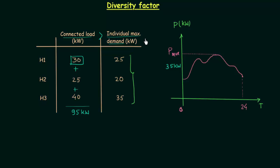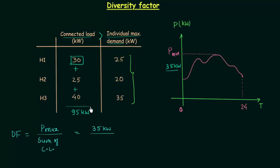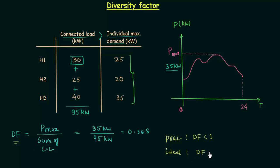In the previous lecture we saw what demand factor is and we also calculated it for this particular case. The demand factor is equal to the ratio of maximum power demand Pmax to the sum of connected load. In this case, the maximum power demand is equal to 35 kilowatts and the sum of connected load is 95 kilowatts, giving a demand factor of 0.368. In practical cases, demand factor is always less than 1, and in ideal cases it is equal to 1.